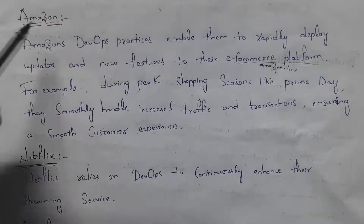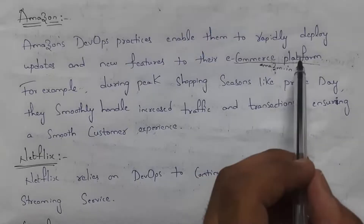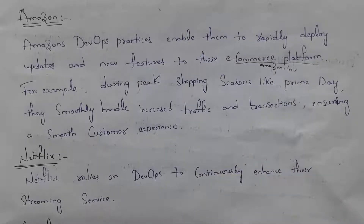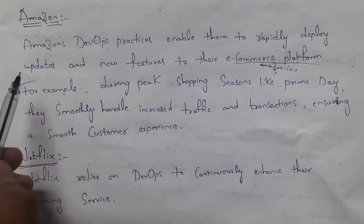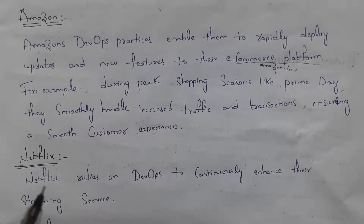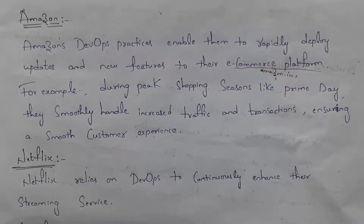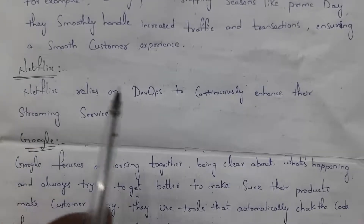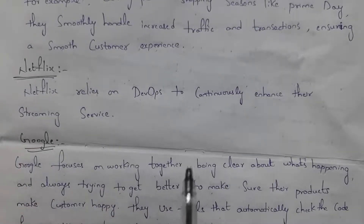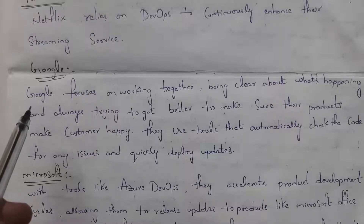Various companies use DevOps to achieve business agility. Amazon uses DevOps so that new updates and features are automatically placed on amazon.in. During festival seasons, millions of people shop on Amazon, and using DevOps tools they smoothly handle increased traffic and transactions. Netflix also depends on DevOps to continuously enhance their streaming services, launching movies and web series using DevOps.